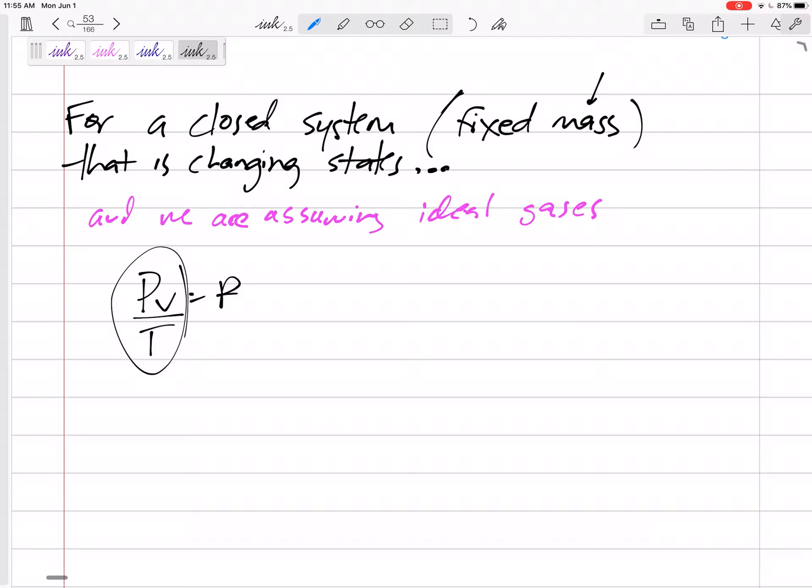So, as long as the mass is not changing, then this PV over T is going to be a constant value of R. This PV over T is going to be a constant value of R. So that means the P at state one, the V at state one, the T at state one, equals the P at state two, the V at state two, the T at state two. So maybe this is a shortcut.